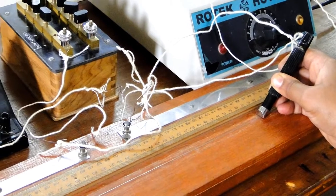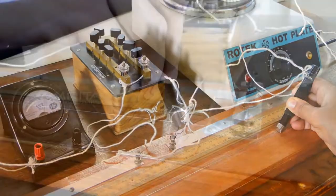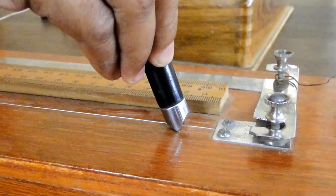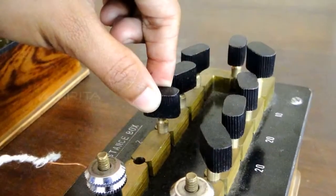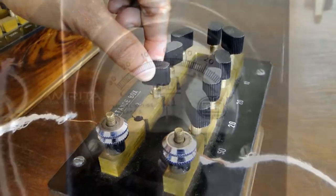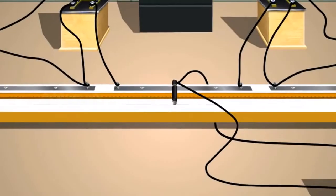Even after the jockey reaches the right end of the bridge wire, if the balance point is not found, then increase the resistance of the fractional box and repeat the previous steps. Continue this until we get a balancing point.